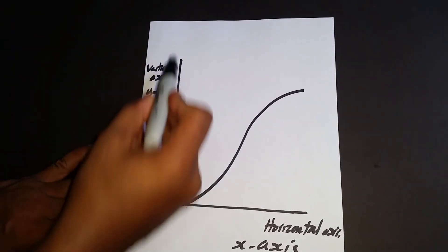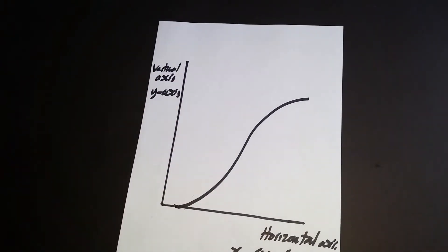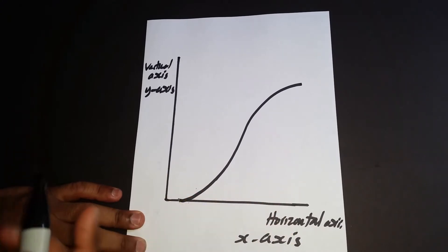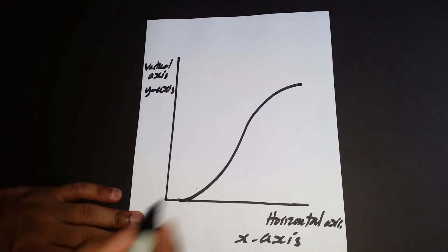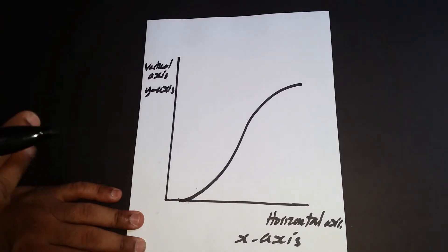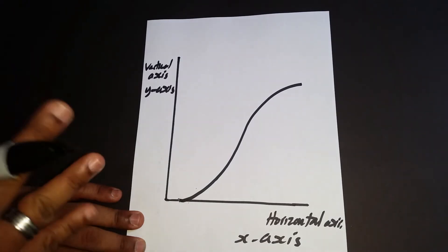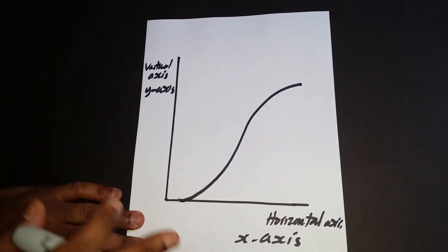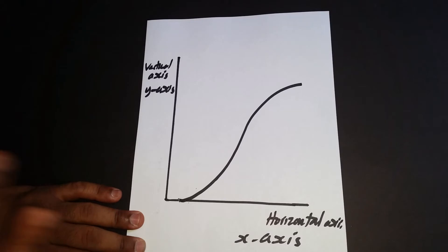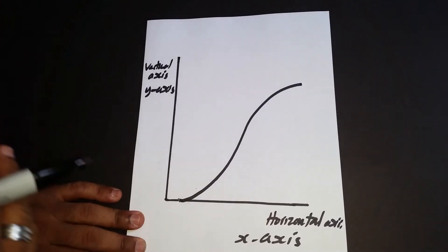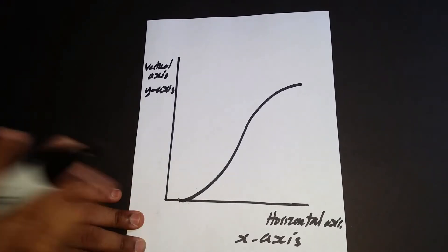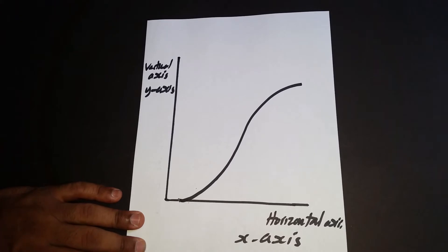This axis must be numbered based on the scale given — extremely important. You don't just start numbering randomly; follow the scale they give you. This is similar to what you do with quadratic graphs. Whatever scale is given for both axes, make sure you follow it. Even if you're not constructing it in an exam, you should master this for university as well.